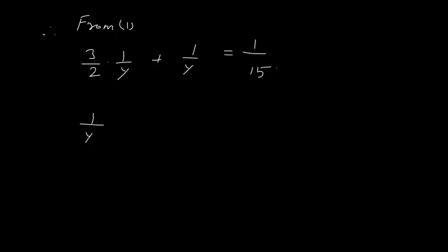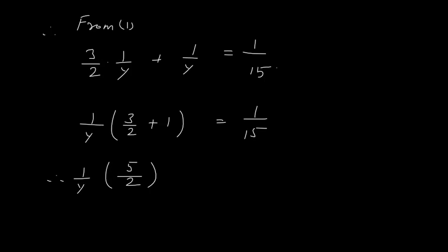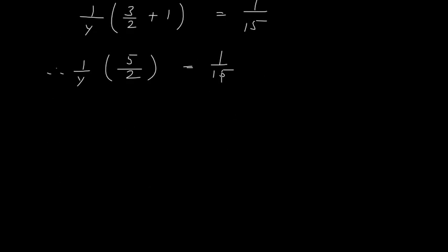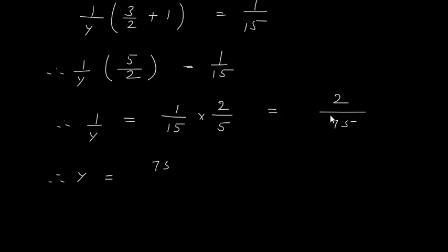Taking 1/y as common: (1/y)×(3/2 + 1) = 1/15, so (1/y)×(5/2) = 1/15. Therefore 1/y = (1/15)×(2/5) = 2/75, which gives y = 75/2 = 37.5. So B alone can complete the work in 37 and a half days.